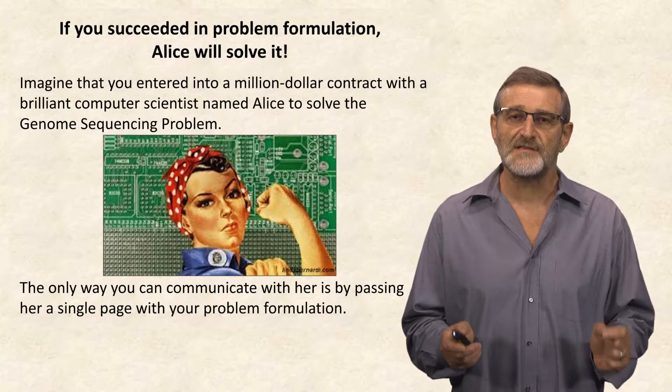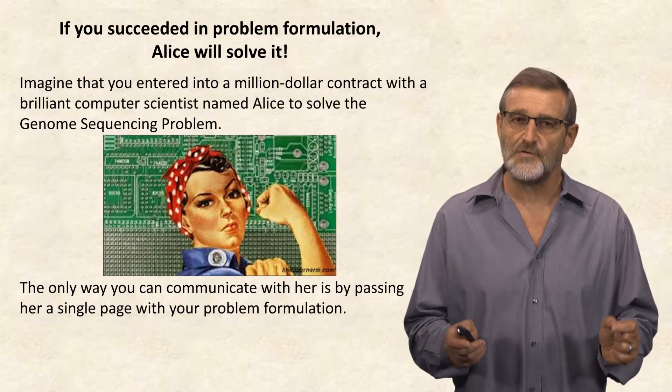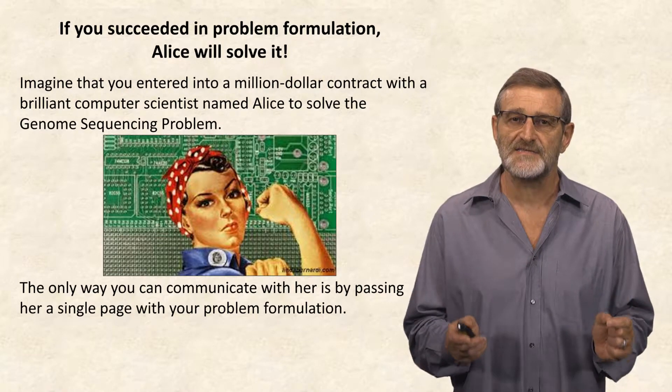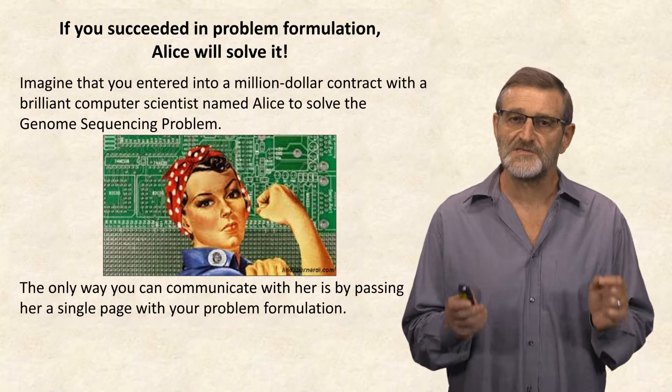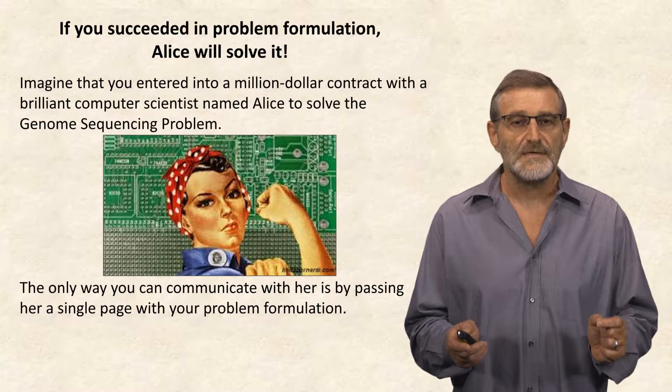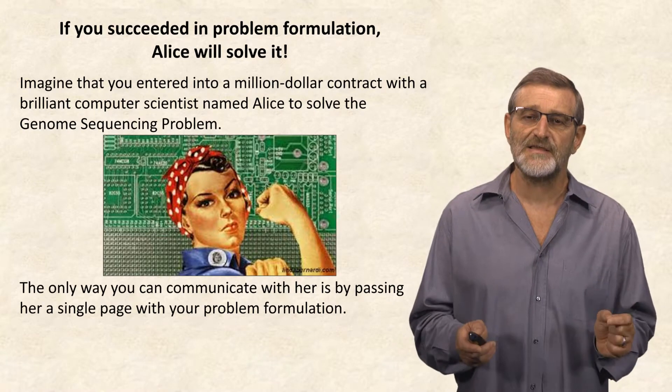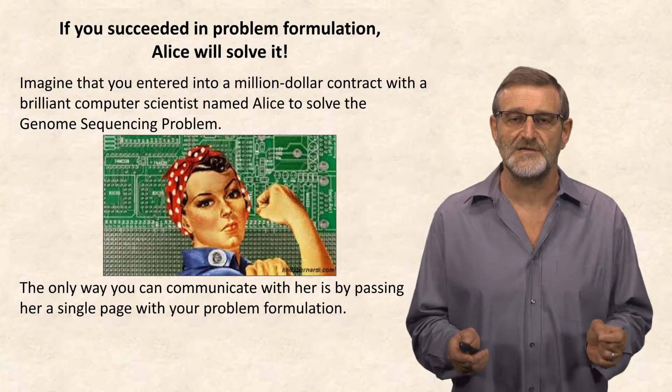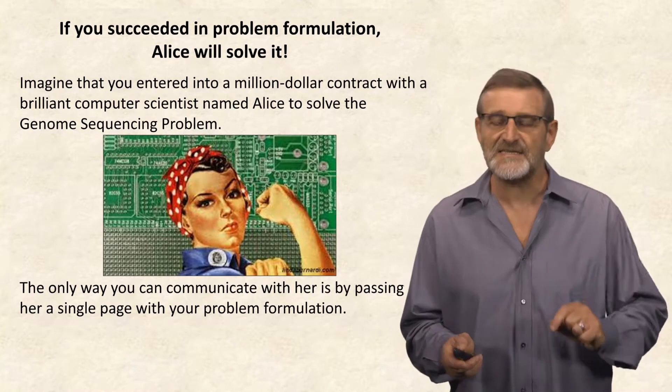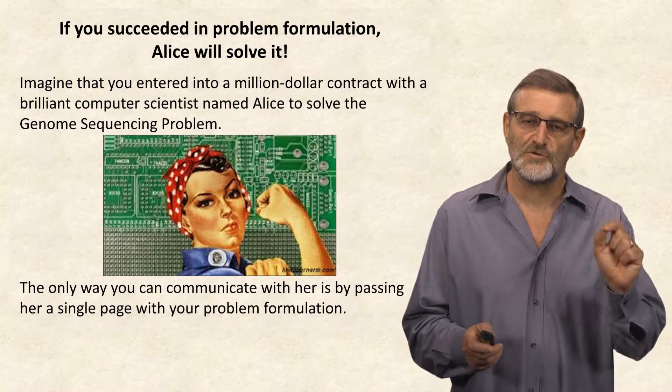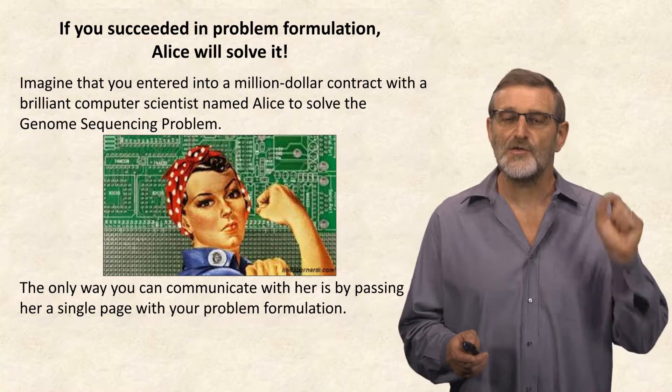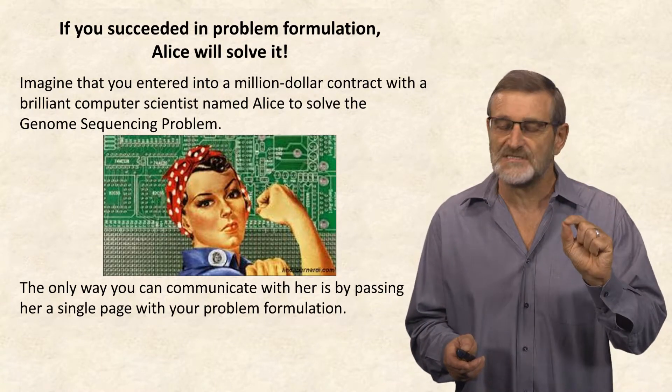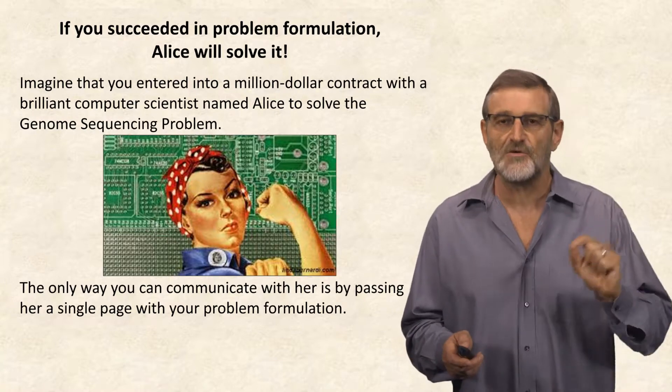Imagine that you entered into a million-dollar contract with a brilliant computer scientist named Alice to solve the genome sequencing problem. But the only way you can communicate with her is by passing her a single page with your problem formulation. If she understands what you want her to do, she will be the best person to solve this problem.